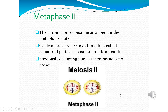In metaphase 2, you have to remember the metaphase plate — at this stage the chromosomes align at the equator, which is called the equatorial plate. From opposite poles of the spindle, they get attached to the kinetochores of sister chromatids.